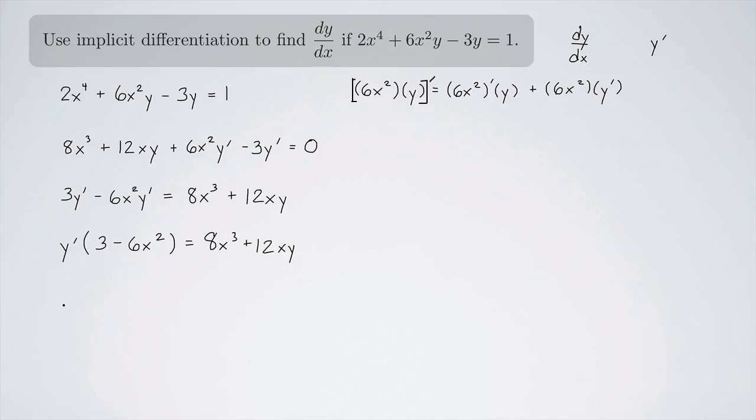And now to get y prime by itself, I can just divide this 3 minus 6x^2 over to the other side. So I'm going to get 8x^3 plus 12xy all over 3 minus 6x^2. And that's my answer.